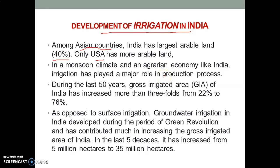During the last 50 years, the gross irrigated area of India has increased more than three-fold — from 22% to 76%. Fifty years back, just 22% of total agricultural fields came under irrigation and the remaining 78% relied upon monsoon rain. But today, almost 76% of agricultural fields rely on artificial irrigation and just the remaining 24% rely on monsoon.